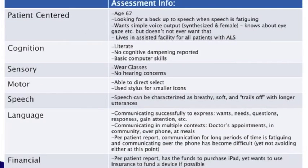We will now apply the feature matching chart to rule out and select apps in a case study. In the assessment using the feature matching approach, a number of domains are considered — for example, the patient-centered domain, motor, sensory, speech, etc. The information gathered in the assessment in each domain will provide critical insight to key app features.